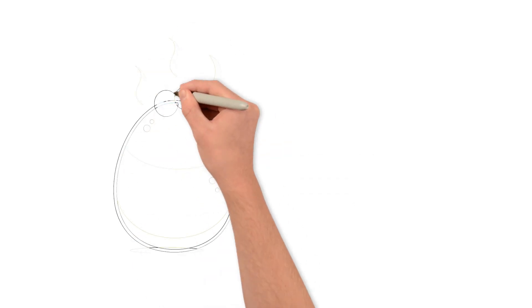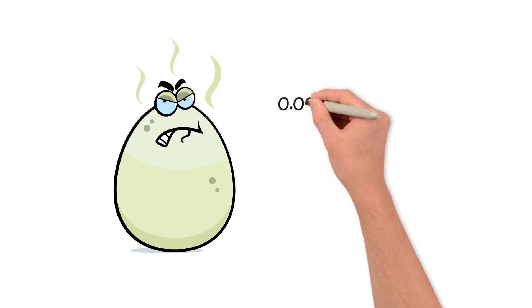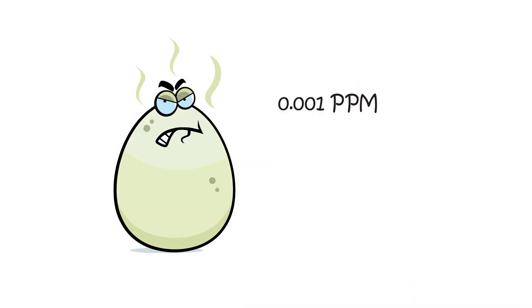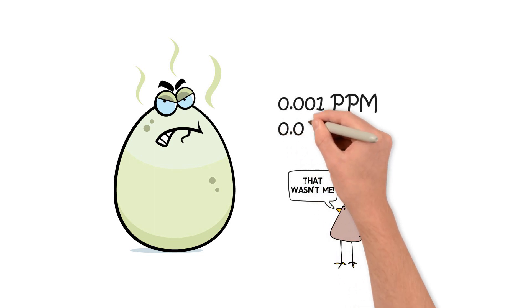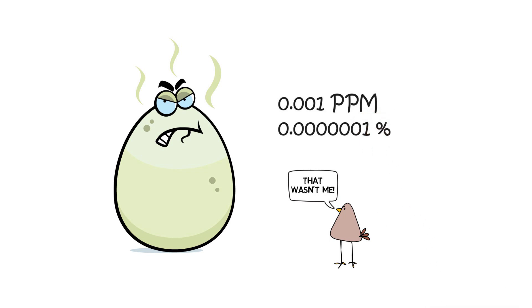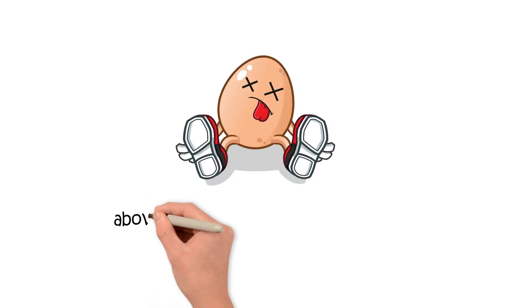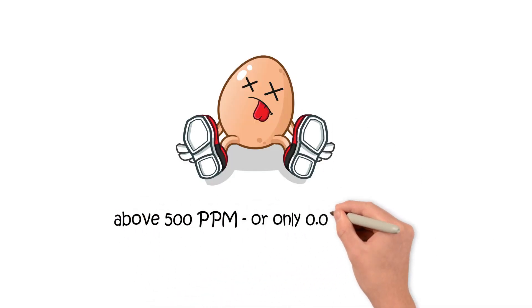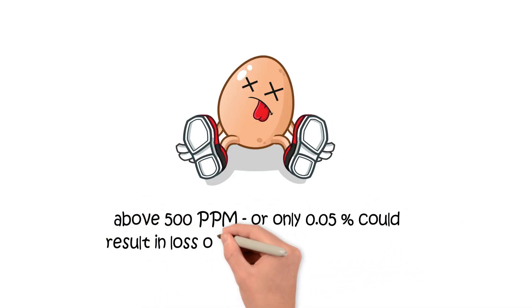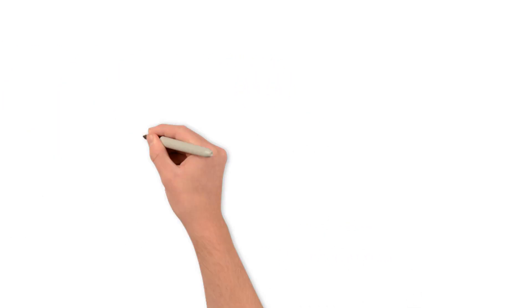To put this into perspective, H2S typically smells like rotten eggs at approximately 0.001 parts per million — as a percentage, this equates to 0.000001 percent. It is generally accepted that any concentrations above 500 parts per million, or only 0.05 percent, could result in loss of consciousness and death.